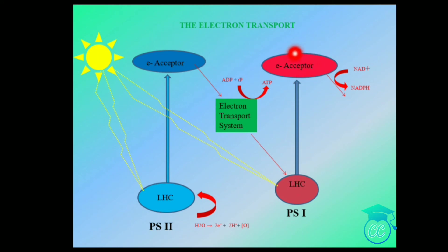The excited electrons from PS1 are picked up by another electron acceptor and move downhill through a higher redox potential, reducing NADP⁺ to NADPH. This is called the Z-scheme of light reaction. To supply electrons continuously to PS2, water is split into hydrogen, electrons, and oxygen.